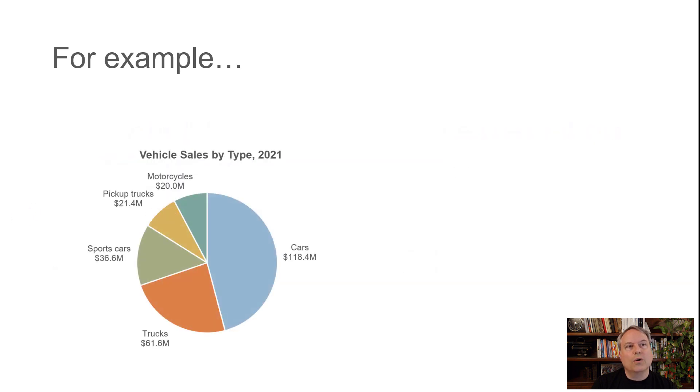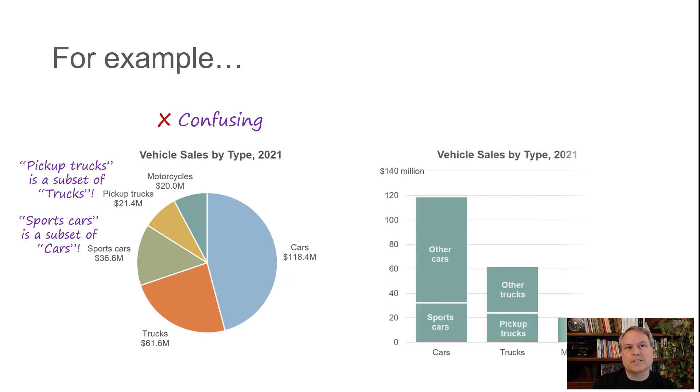Or look at our vehicle sales being broken down by vehicle type. It looks like a reasonable chart until we realize that pickup trucks are actually a subset of trucks, and sports cars are a subset of cars. So even though this pie chart makes it look like almost half our sales are cars, I'm not really sure, because sports cars are included within cars. This is actually very confusing. Now the overlapping nature of the categories is much more clear—I can see that sports cars are a subset of all cars and pickup trucks are a subset of all trucks. Not confusing anymore.